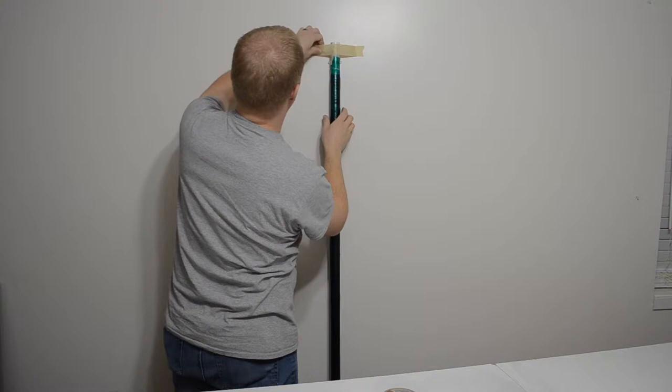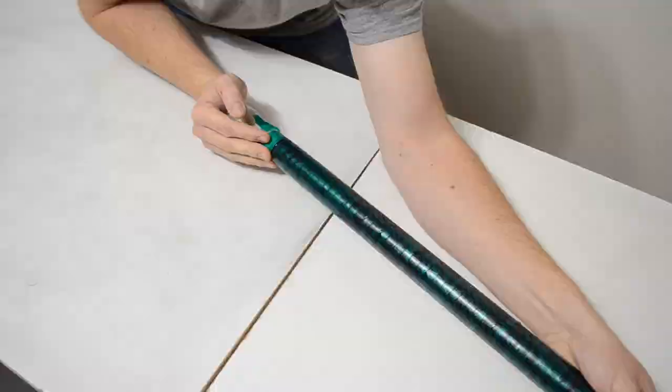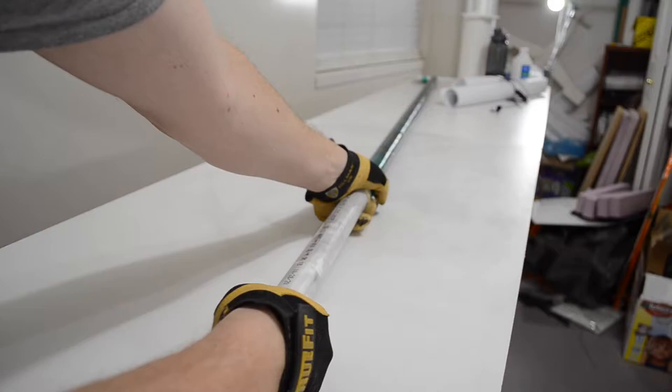Once it was cured, the part had a pretty firm death grip on that mandrel. So I decided to use one of the unique properties of carbon fiber to my advantage. You see, PVC shrinks when it's cooled. Carbon fiber, on the other hand, grows when it's cooled. So I threw it out in the cold winter air for about half an hour, then quickly brought it inside and slid it off the mandrel. And it worked a peach.